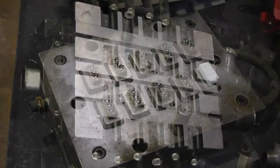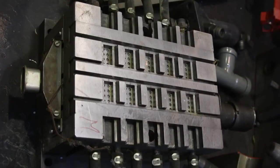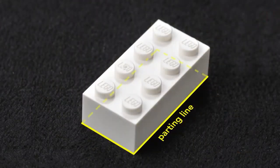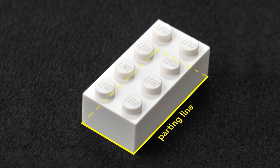The core half and the cavity half of Lego molds are designed so that the parting line is at the bottom edge of the brick. This hides the parting line.